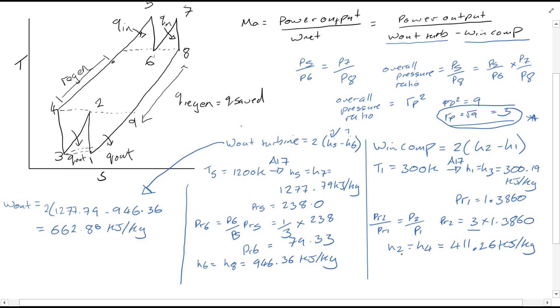And then finally, subbing in those values, bringing this equation down and subbing in the values that we found, you'll find that W in comp is equal to 222.14 kilojoules per kg.